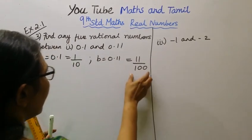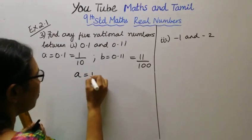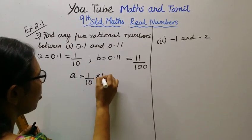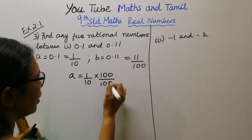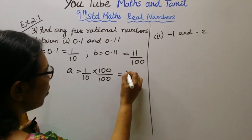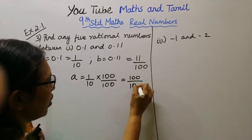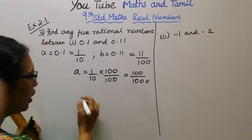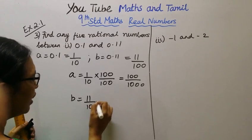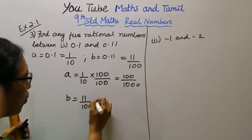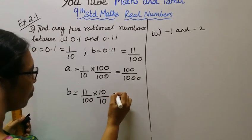Now, the five rational numbers I will tell you. A is equal to 1 by 10 multiplied by 100 by 100, which equals 100 by 1000. B equals 11 by 100, multiplied by 10 by 10, which equals 110 by 1000.